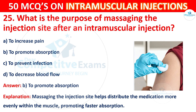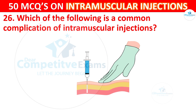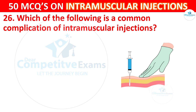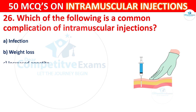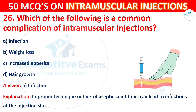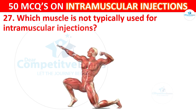Question 26: Which of the following is a common complication of intramuscular injections? Options are: infection, weight loss, increased appetite, or hair growth. The correct answer is A, infection. Improper technique or lack of aseptic conditions can lead to infection at the injection site. Question 27: Which muscle is not typically used for intramuscular injections?